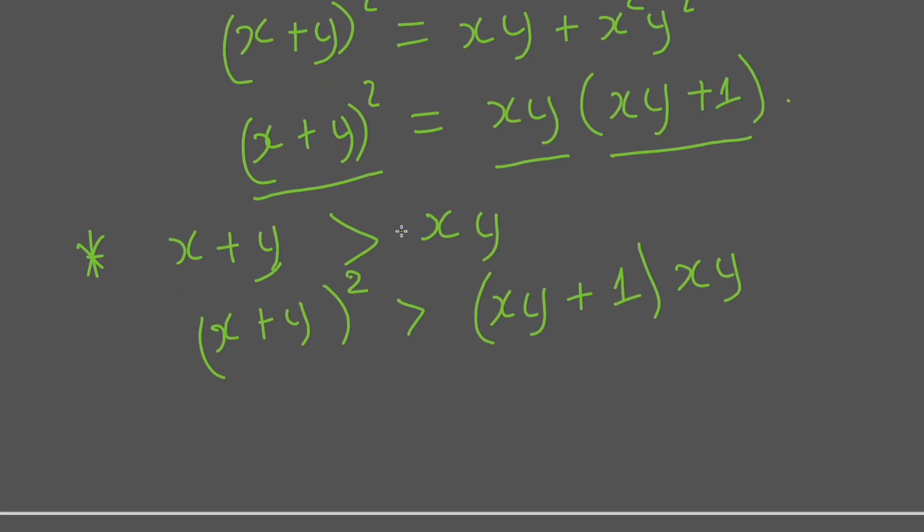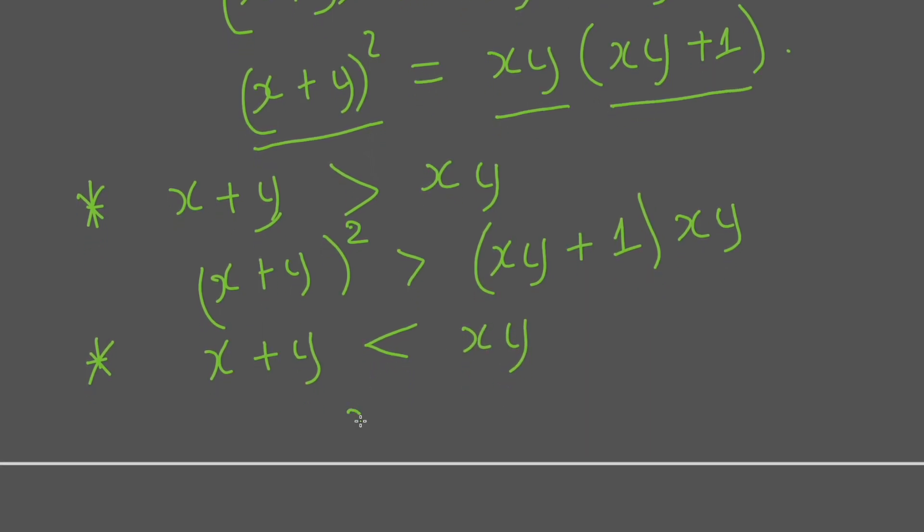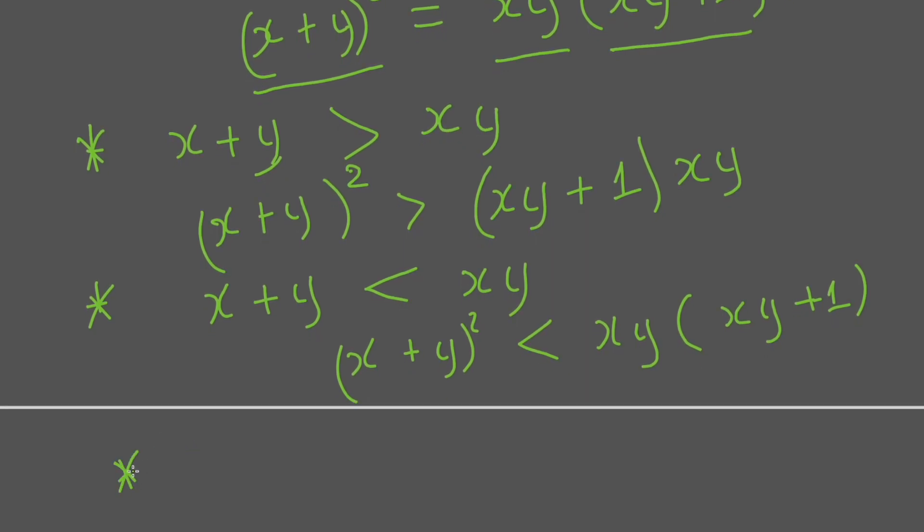The second case: if x + y is smaller than xy, similarly we will have (x + y)² smaller than xy times (xy + 1). And if x + y equals xy, that's impossible.